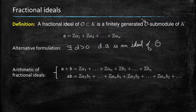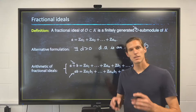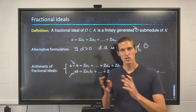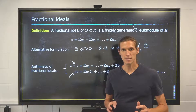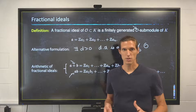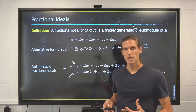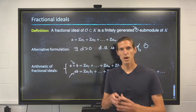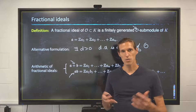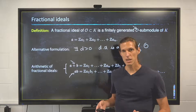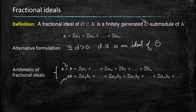One thing that is really important about fractional ideals is that we can perform arithmetic operations on them. In particular, we can add them and multiply them. Assume that the fractional ideal A and the fractional ideal B are given by their bases as Z-modules, so as Euclidean lattices. Then the fractional ideal A plus B is the one generated by all the sums of elements of A and B, which you can view as the module generated by A1, A2, ..., AN, B1, B2, ..., BN.